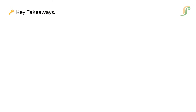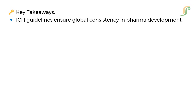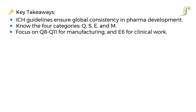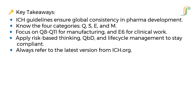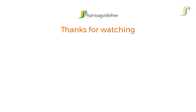Key takeaways: know the four categories — Q, S, E, and M. Focus on Q8 to Q11 for manufacturing and E6 for clinical work. Apply risk-based thinking, QbD, and life-cycle management to stay compliant. Always refer to the latest version from ICH.org.